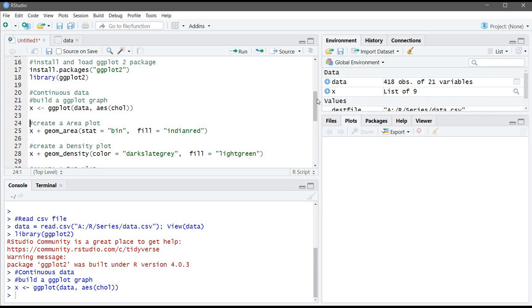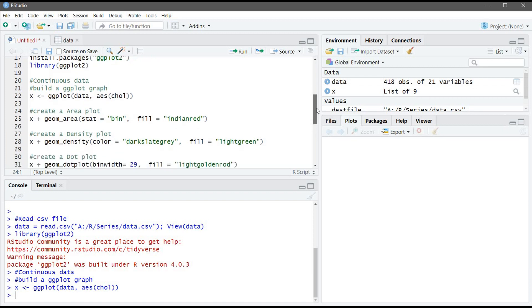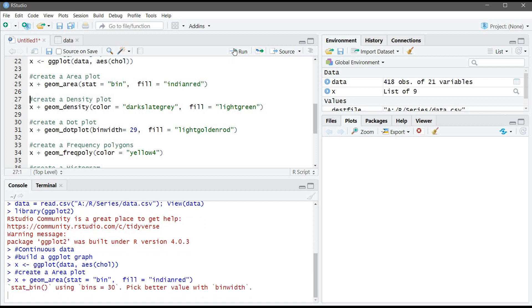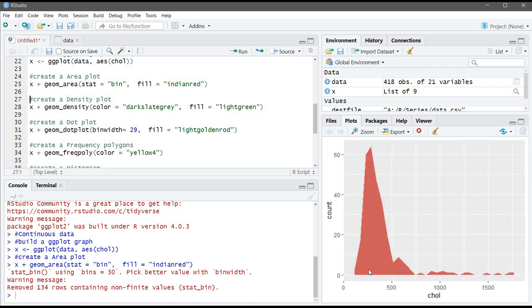Now we will just specify the geometry. As I mentioned, we will use stat equals bin to divide or separate the graph into bins, and then we will use Indian color as a fill. So let's run this command. So now we can see here most of the cholesterol lies between 0 and 500.